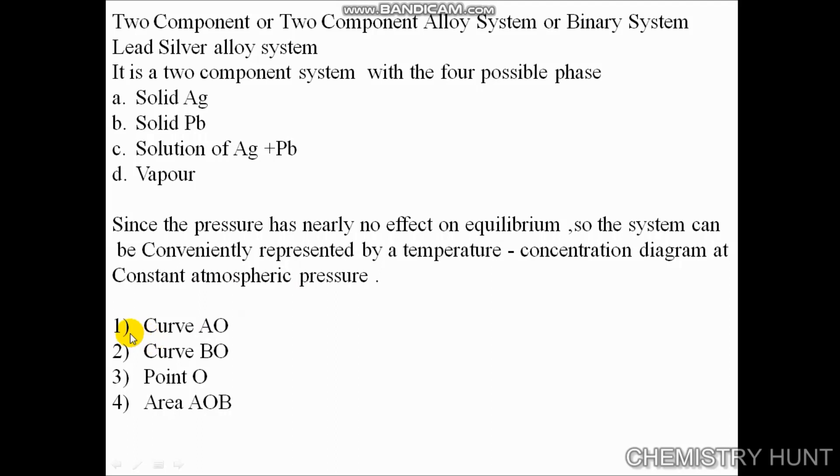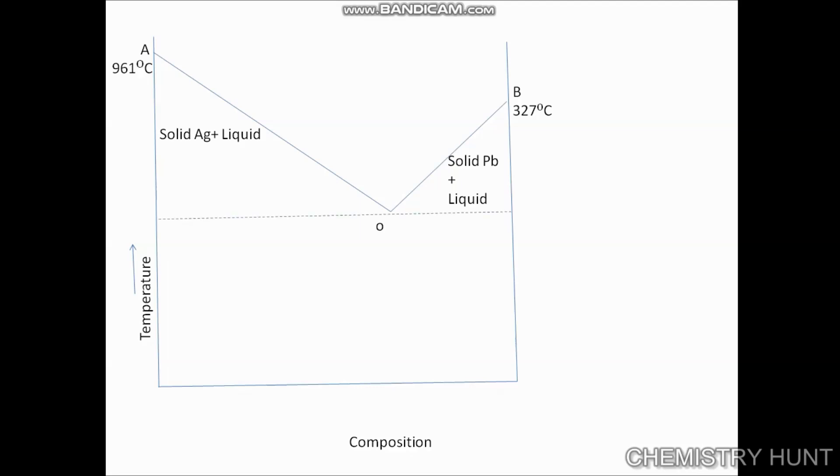In this diagram, we are going to see curve AO, curve BO, point O, and area AOB. The diagram shows temperature and composition. In this we see point AO, point BO, solid silver plus liquid, and solid lead plus liquid.